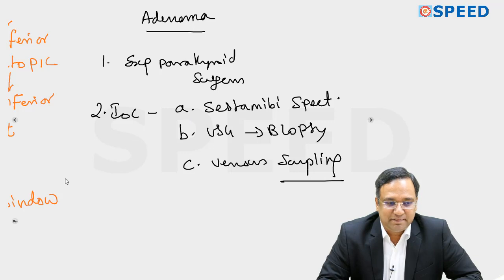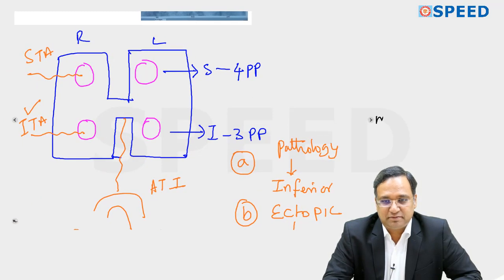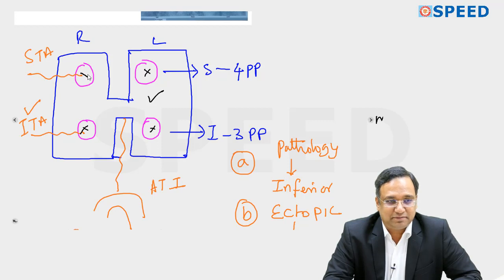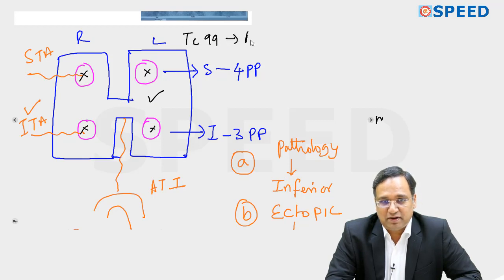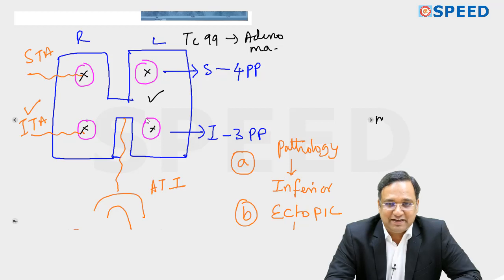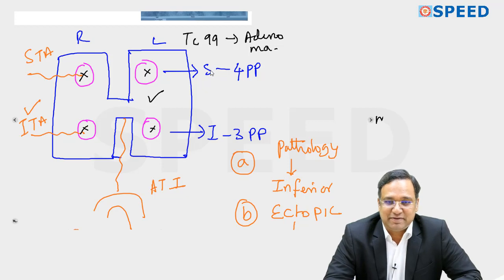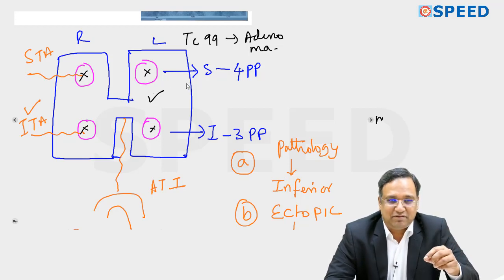With the Technetium-99 sestamibi SPECT scan, normal thyroid will take up the tracer. Normal parathyroid will not take up. Uptake of Technetium-99 is only by the adenoma. If the adenomatous gland is in the posterolateral aspect of the thyroid, it can be identified. If in an ectopic location, look in the anterior or posterior mediastinum. Ultrasound can also identify the parathyroid pathology, and a biopsy can be performed accordingly.